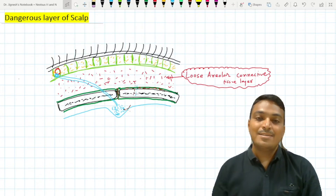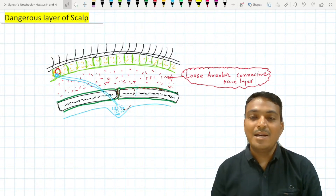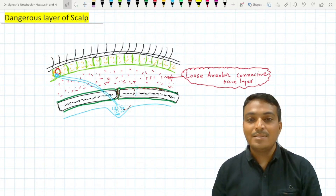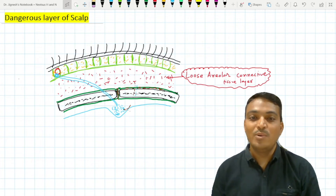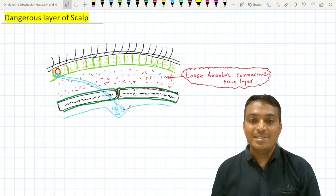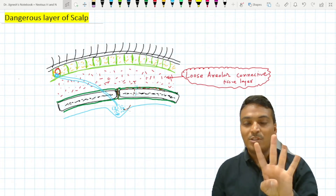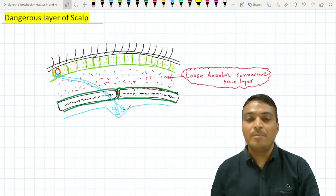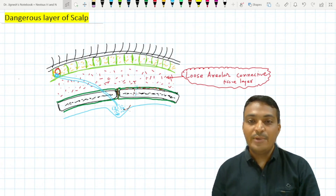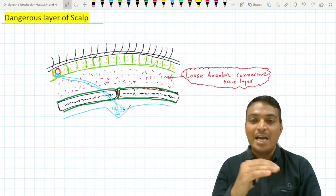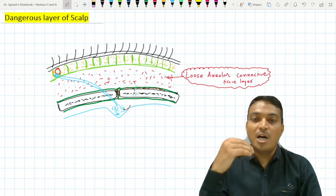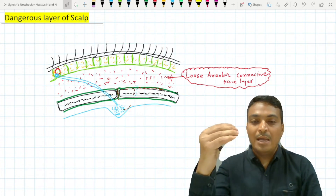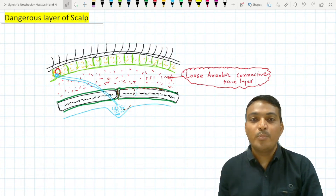Let's see the dangerous layer of the scalp. The dangerous layer of the scalp is the loose areolar connective tissue layer, which is the fourth layer out of the five layers of the scalp. This loose areolar connective tissue layer lies between the galea aponeurotica above and the pericranium below.